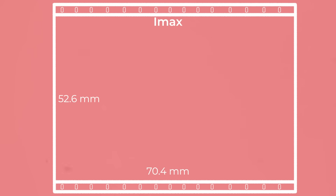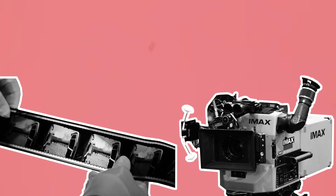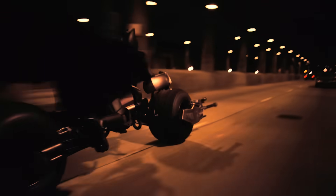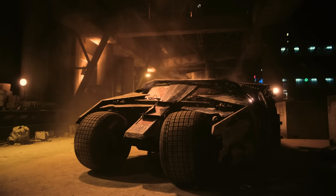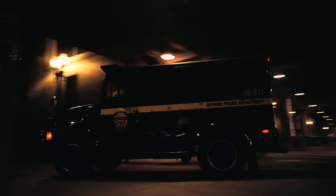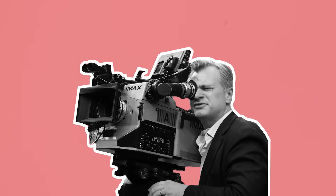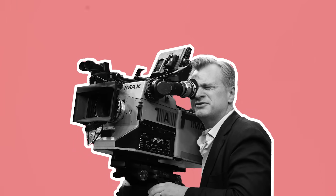Finally, the largest possible motion picture format that you can shoot is IMAX film. With an enormous 15 perforations, an IMAX frame covers a 70.4x52.6mm image area. Due to its enormous negative size and the large specialised cameras required to shoot it, this format is prohibitively expensive and out of the budget range of most productions, but it has seen a bit of a resurgence in recent years on high budget blockbusters from directors such as Christopher Nolan, who champion the super high fidelity film format.